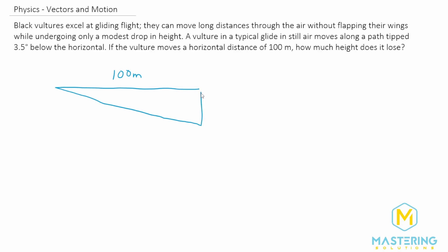Obviously that's probably bigger than 3.5, but I'm just making it easier so we can see it. So we have 3.5 degrees below the horizontal. And they want to know what height does it lose.